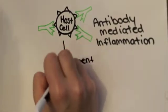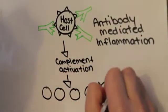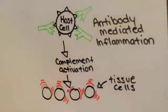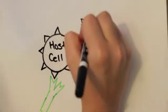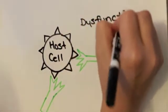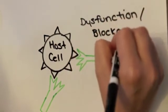Antibody mediated inflammation of the tissue which activates the complement system. Or there can be dysfunction or blockage of the targeted cell which is when the antibodies sit on the receptors and block them.